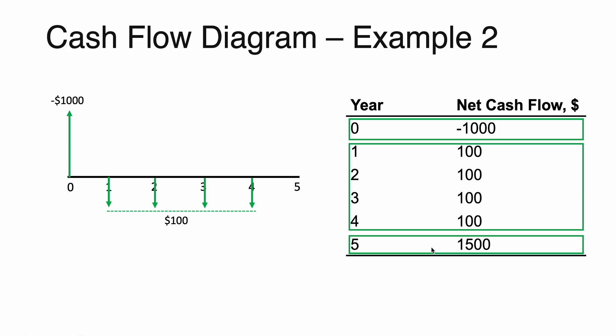Lastly, for year 5, we have a positive net cash flow of $1,500, so we draw an arrow pointing inwards, indicating that $1,500 is going into the system. Again, the length of the arrows correspond to how large or small the amounts are. Obviously, $1,500 is much larger than $100, and that's why the arrow is longer. So that's it for this video. Thank you.